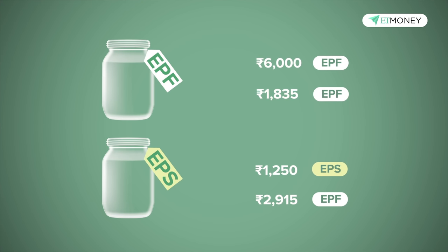A more comprehensive list of scenarios is available on the EPF India website, with a link in the description of this video. For medical withdrawals, the member is allowed to withdraw the employee's accumulated corpus or six times the monthly salary, whichever is lower. For a wedding withdrawal, the member must have completed at least seven years of service, after which 50% of the employee's contribution with interest can be withdrawn. So different purposes have different rules, and one has to be mindful of that.